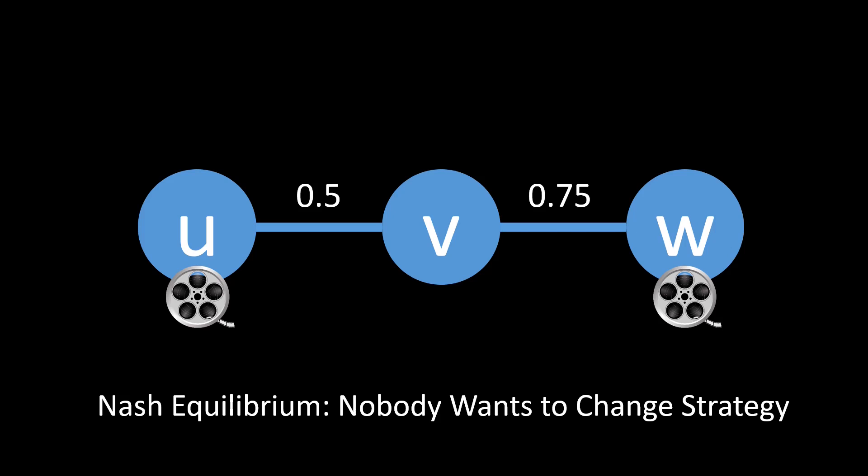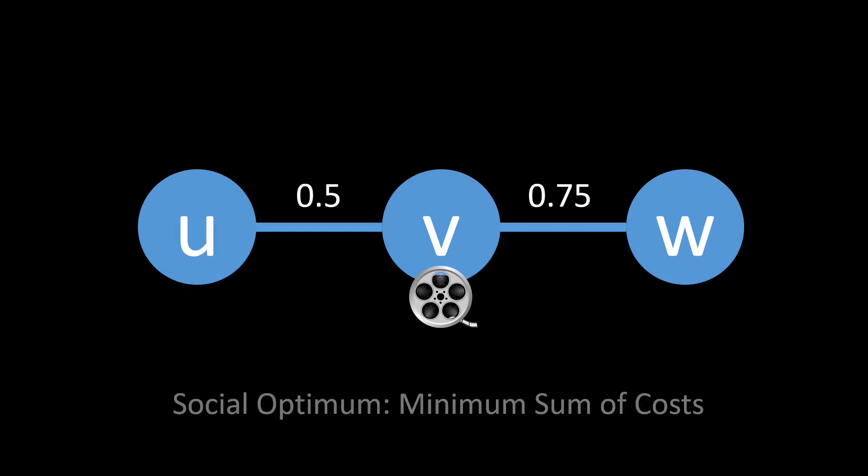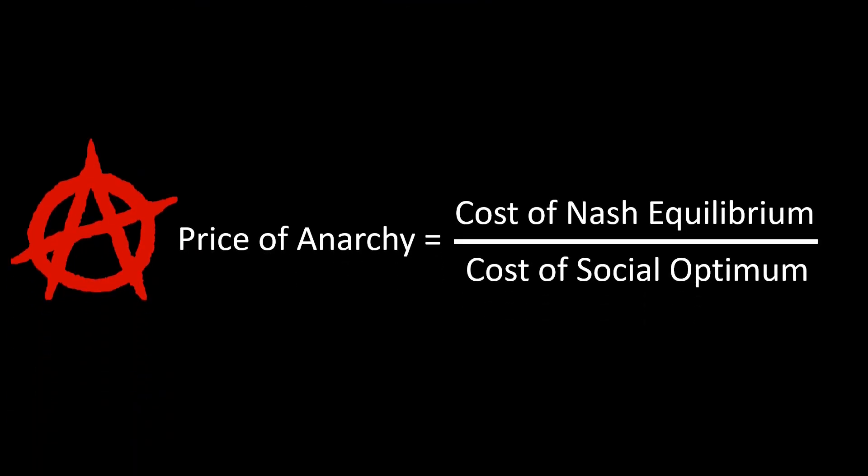But the cost of this solution is strictly higher than if only node v cached the movie. The social optimum is defined as the minimum possible total cost. In this network, at least one node must cache the movie, and we would be best off if node v caches the movie, since node v is in the center of the network — this minimizes the sum of the costs of all participants. In general, we are interested in how far the cost of the social optimum is from the cost of a Nash equilibrium. This is called the price of anarchy.